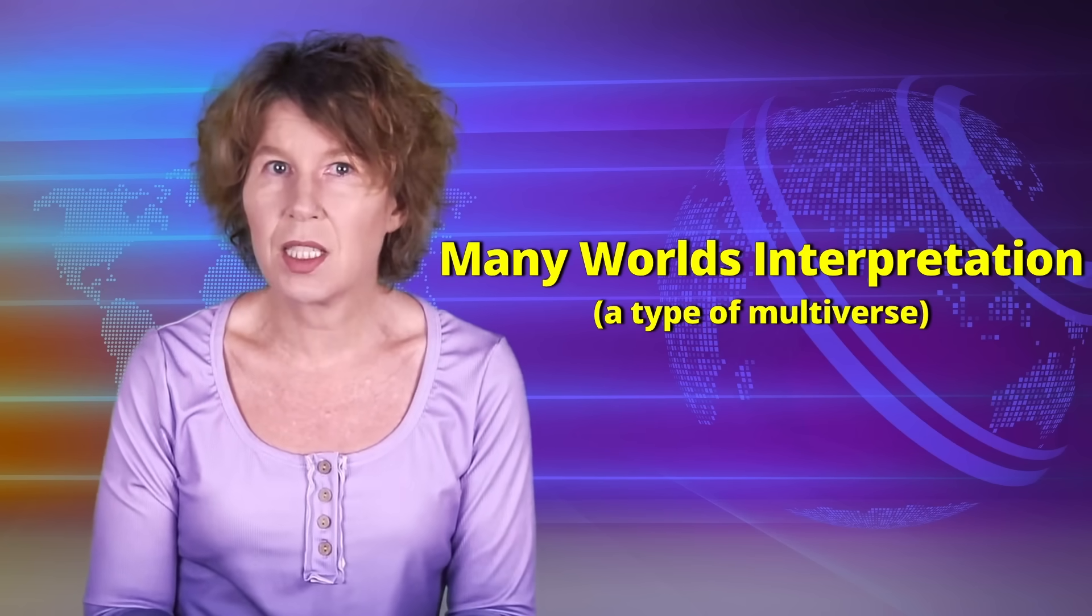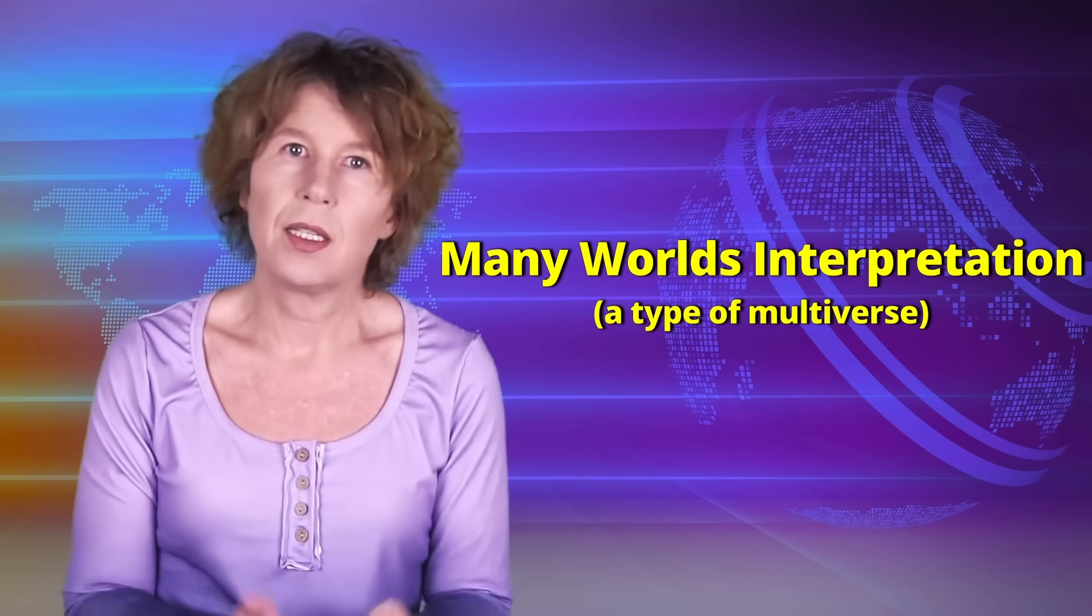The New Scientist article is about a specific type of multiverse, that's the many-worlds interpretation of quantum mechanics. This interpretation has it that every possible outcome of a quantum measurement happens in its own universe. Just so happens that we only ever observe one.